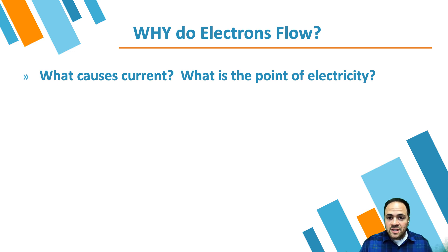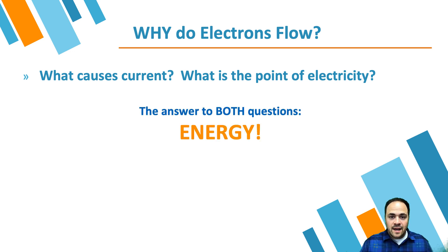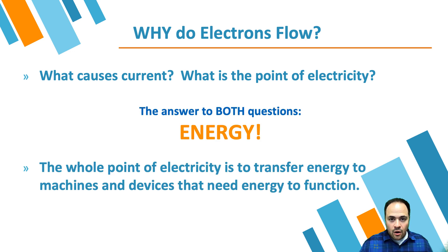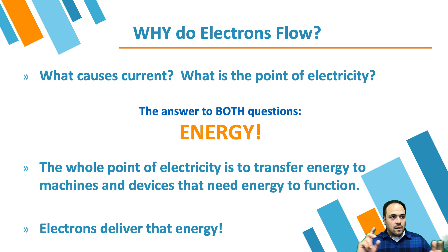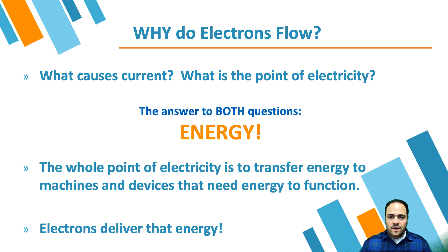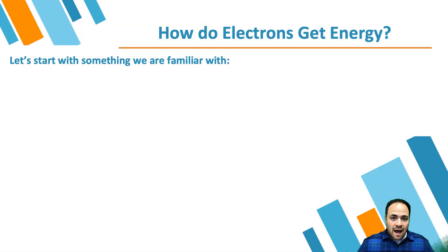Both of those questions can be answered with the same answer: energy. Our devices run on energy, and electrons are the things that deliver that energy to our devices — things like our phones, microwaves, TVs, computers, iPads — whatever you're watching this video on is running off of electrical energy, and that has to get delivered to your device. Electrons deliver that energy.